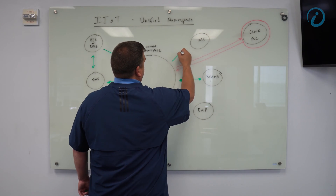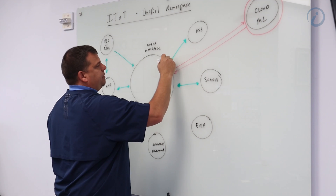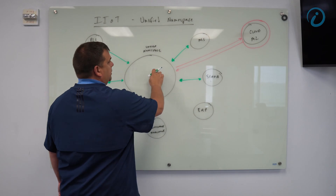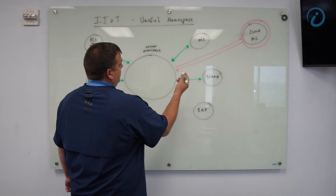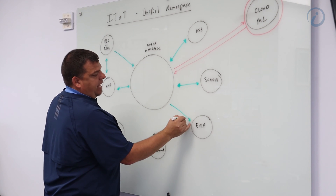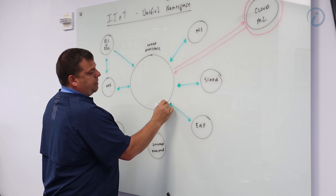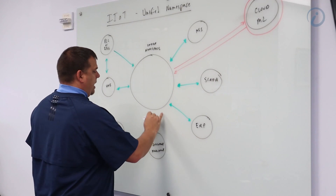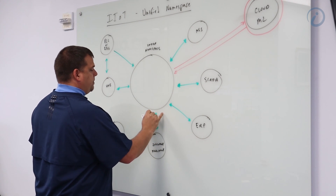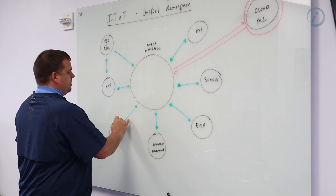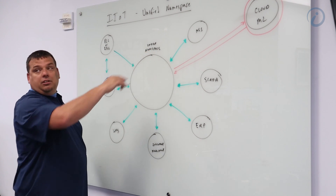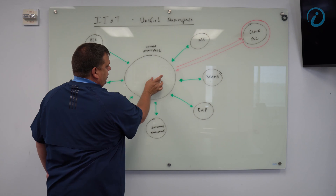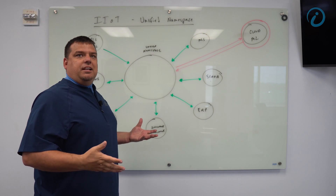The SCADA system may process data and post that information back into the Unified Namespace. The MES system will grab its information, do all of its post-processing, and publish it back into the Unified Namespace. The ERP system will grab its information from the Unified Namespace, do post-processing and publish back in. The same thing applies to inventory management, warehouse management systems, and cloud and machine learning.